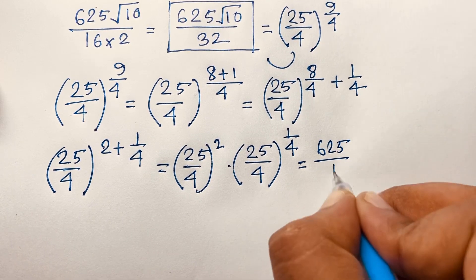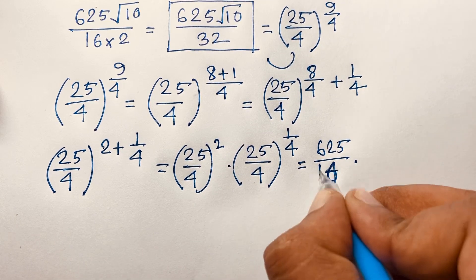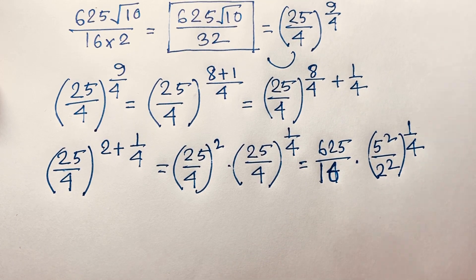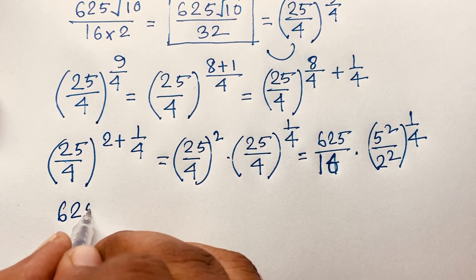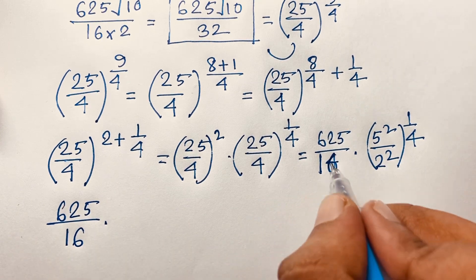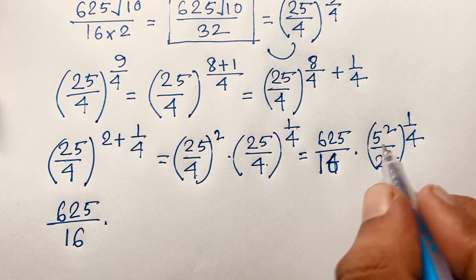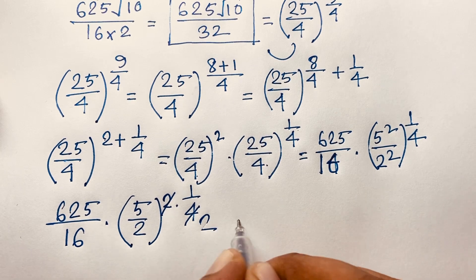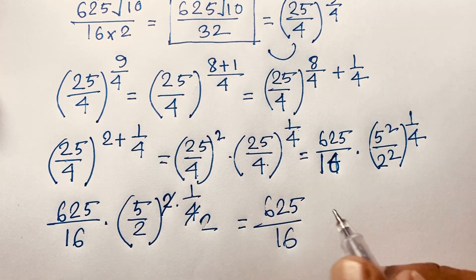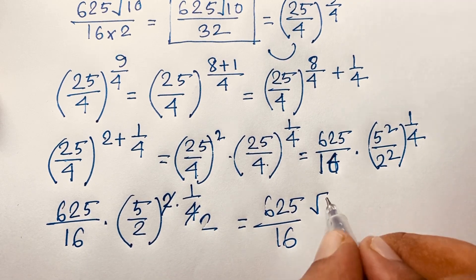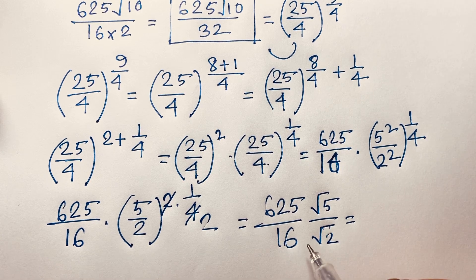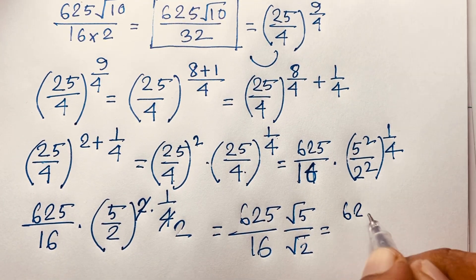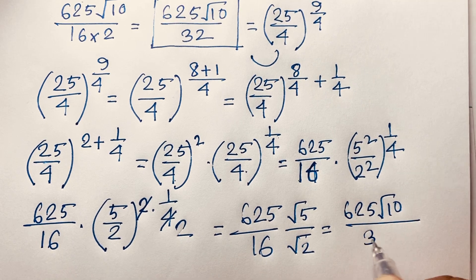So (25/4)^2 = 625/16. For the second factor, (25/4)^(1/4) = (5²/2²)^(1/4) = (5/2)^(2×1/4) = (5/2)^(1/2) = √5/√2. Rationalizing again by multiplying √2/√2 gives √10/2. The final answer is 625/16 × √10/2 = 625√10/32.